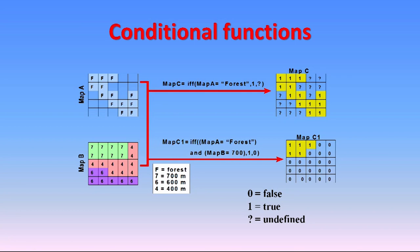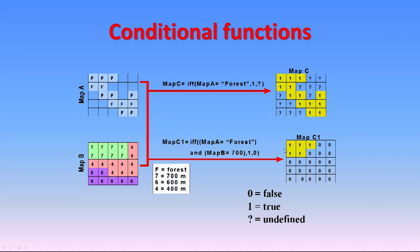Conditional functions: map C equals if map A equals forest then true, else undefined. Areas where the condition is not met are assigned a question mark (undefined), shown as white areas on the map. Similarly, map C: if map A is forest AND map B equals 700 then 1 (true), else 0 (false). On one map, two maps, or multiple maps, these conditional operations can be performed similarly.